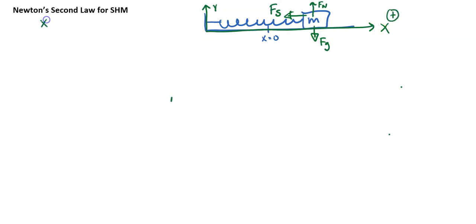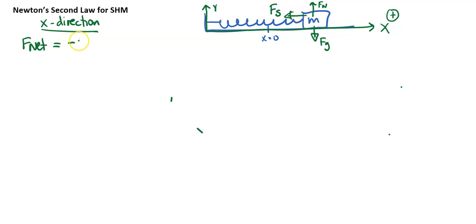Let's look at the x direction. In the x direction, we only have one force — spring force — which is pointing to the left. So F_net equals negative F_s. F_net we know is ma, and spring force is negative kx. Let's go ahead and see what we can plug in.